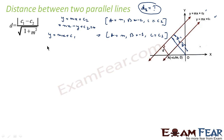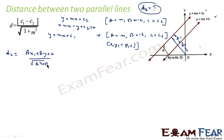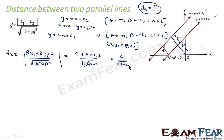Now the distance of line y = mx + c1, that is d2, is nothing but the distance of line c1 from the origin. So origin is (0, 0), meaning x1, y1 are 0, 0 in both cases. So d2 = |ax1 + by1 + c| / √(a² + b²). This becomes |0 + 0 + c1| / √(m² + 1) = c1 / √(1 + m²). This is d2, the distance of line y = mx + c1.